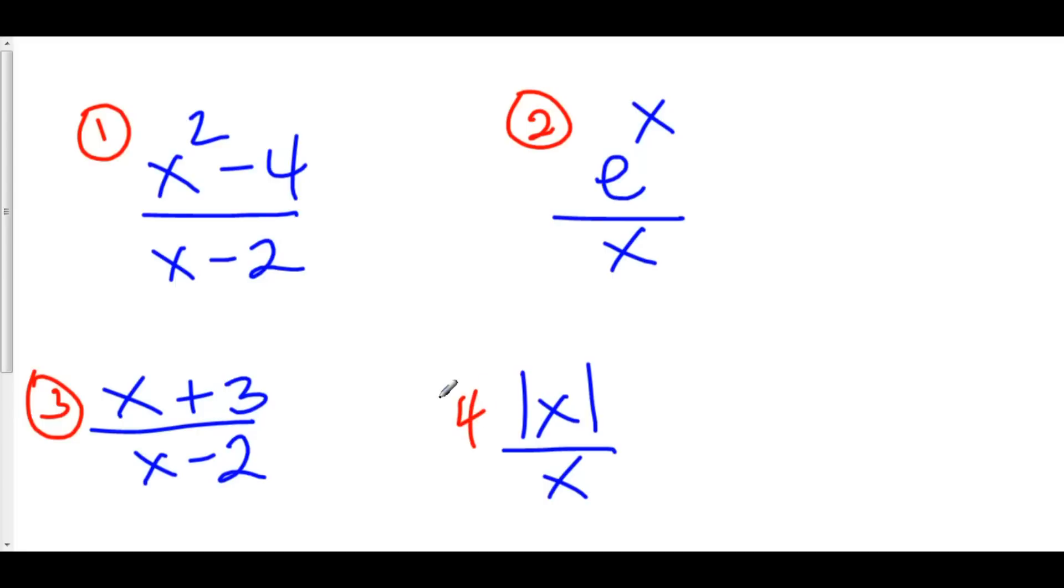Now, the last one is four. Whenever you see absolute value, either on top or on the bottom, you should be very wary because that means there might be a jump working. And in fact, in this particular example, there is a jump. This particular function looks like this. So if you see absolute value, just check for a jump wherever there might be a discontinuity.